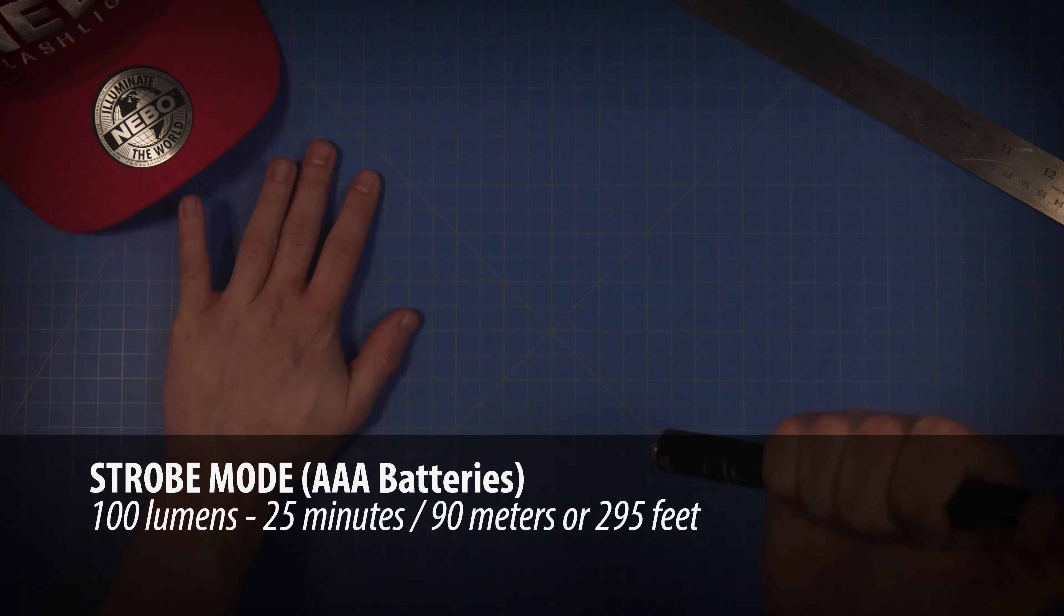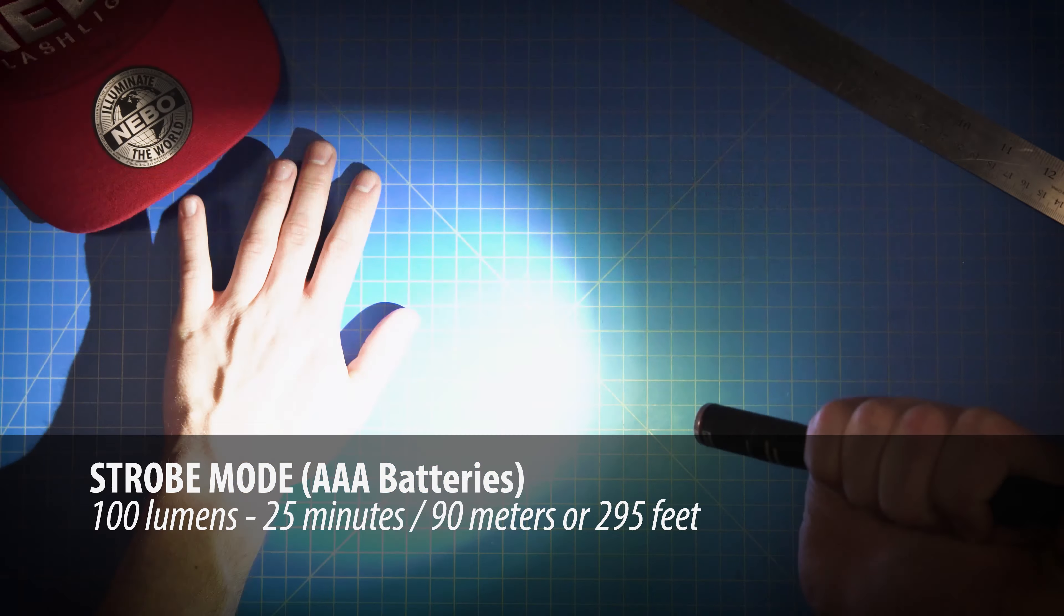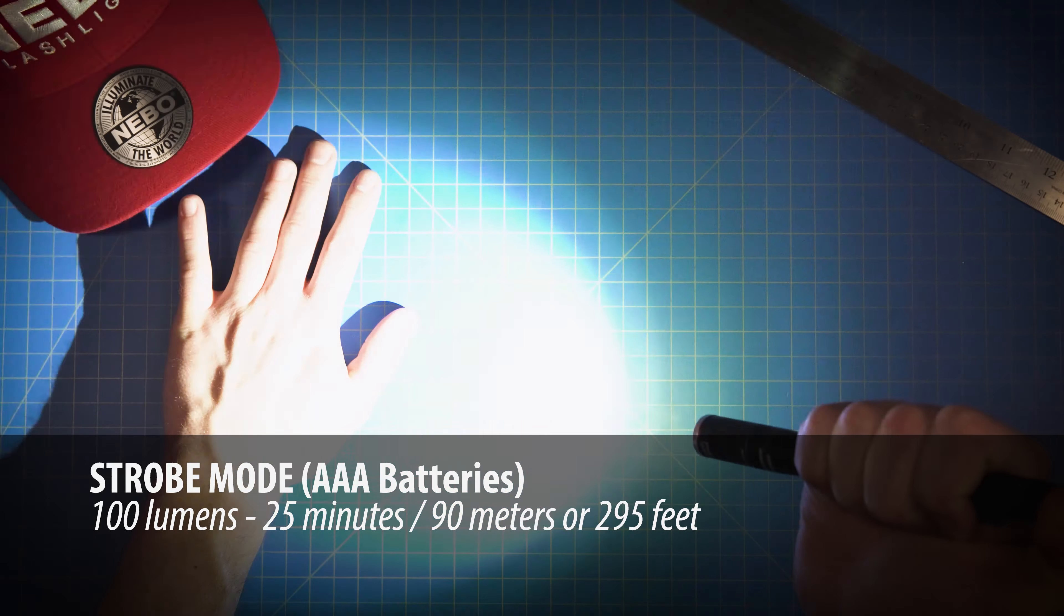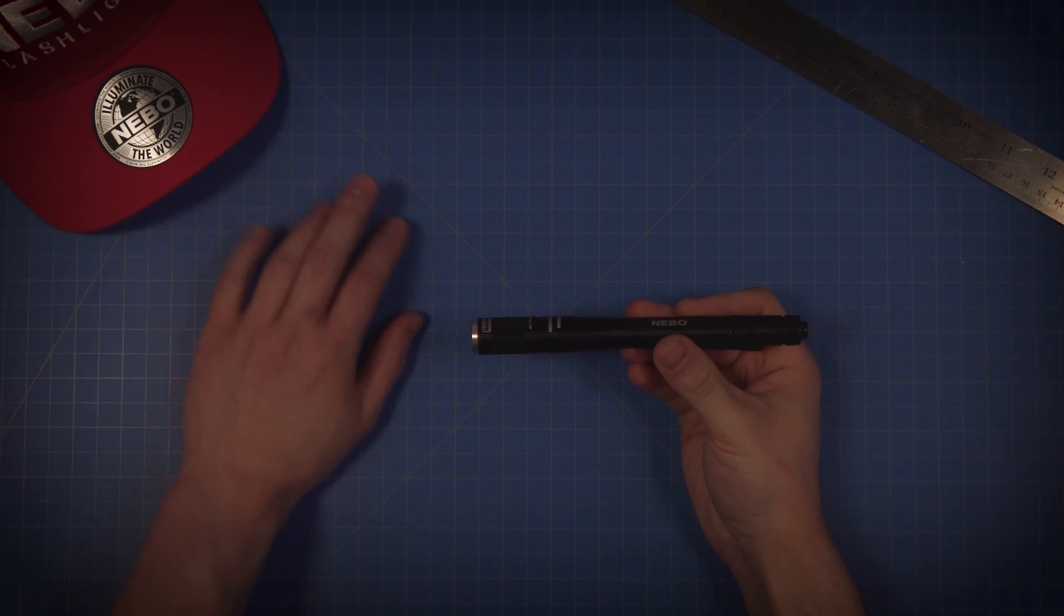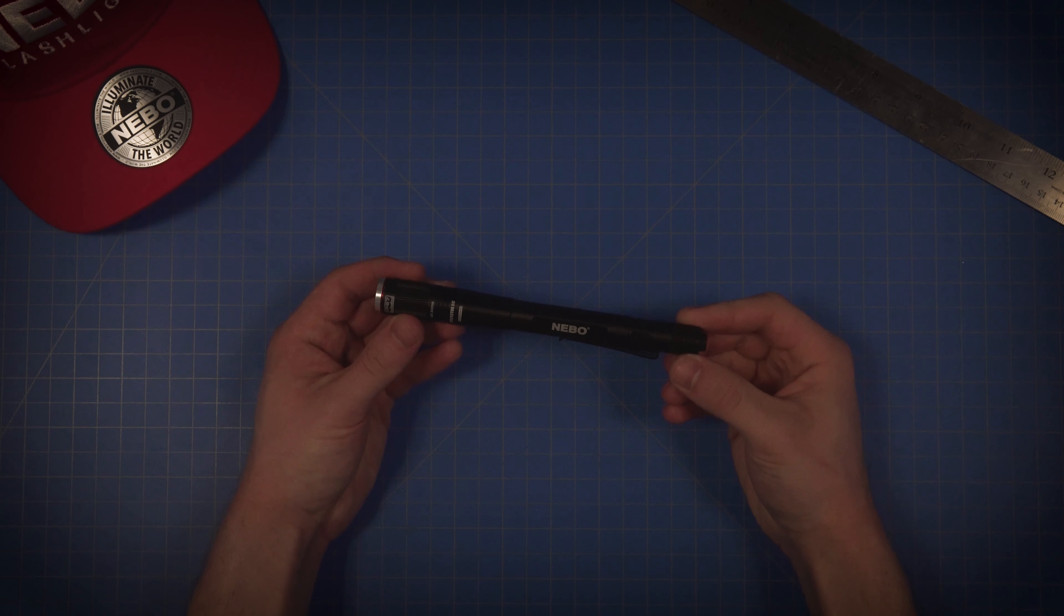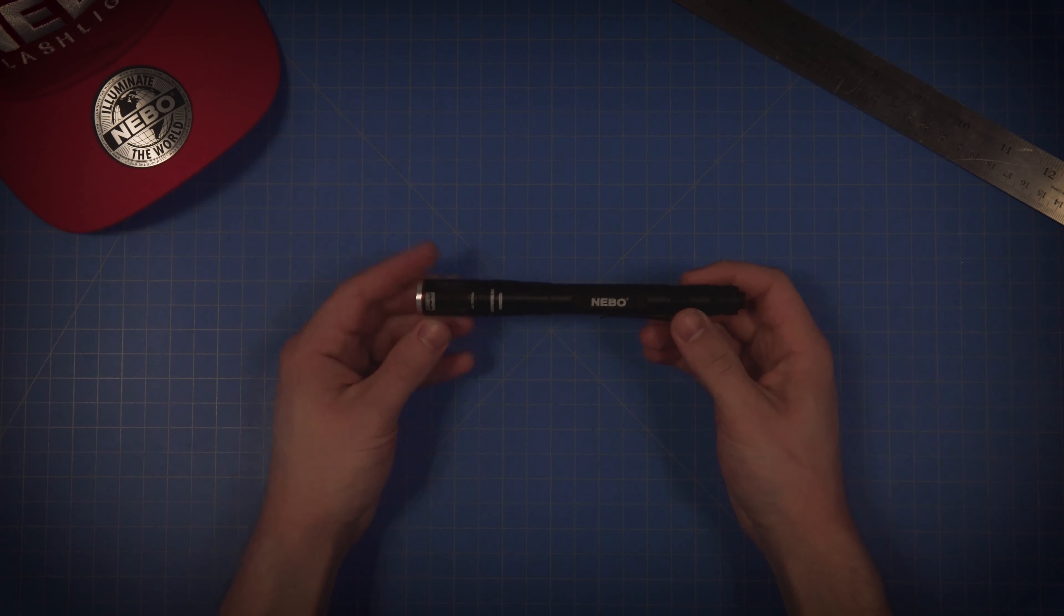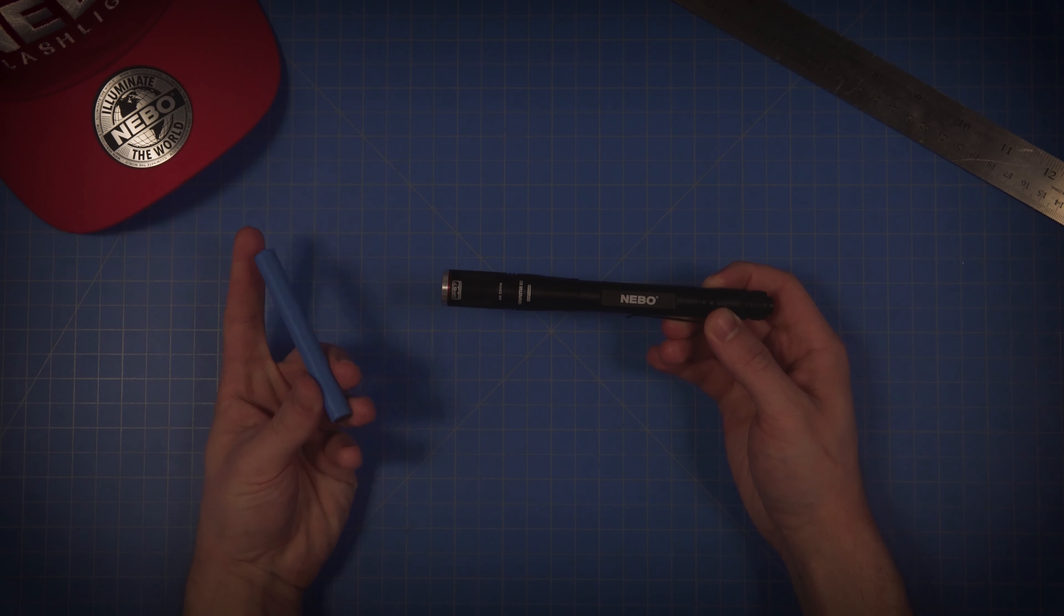And in strobe, it's up to 100 lumens, shining at a distance of up to 90 meters, or 295 feet, for 25 minutes. That said, even with the decreased light output, the FlexPower feature can be very handy in situations where you simply can't wait for the light to charge.